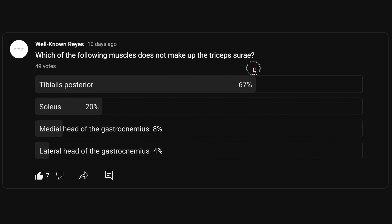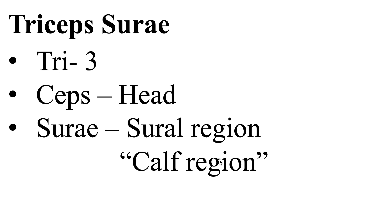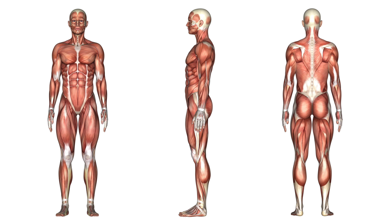The very first thing we have to understand is what is the triceps surae? The prefix 'tri' means three. The suffix 'ceps' means head. And 'surae' means the sural region — the calf region. So we're looking for a muscle that has three heads and is in the calf region. Let's look at the muscular system to see where the triceps surae is — more specifically, the calf region.